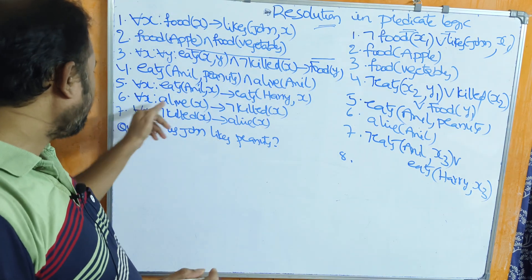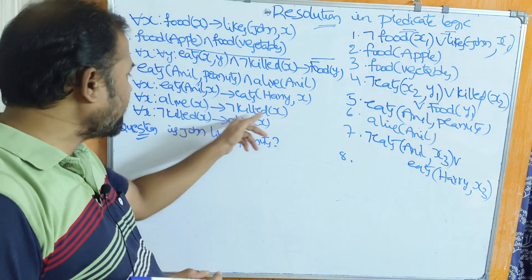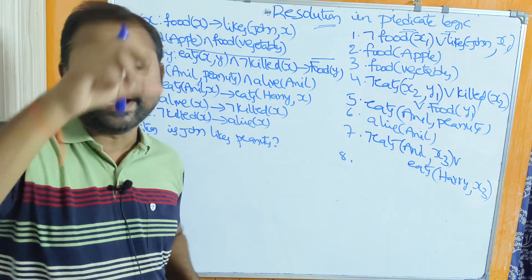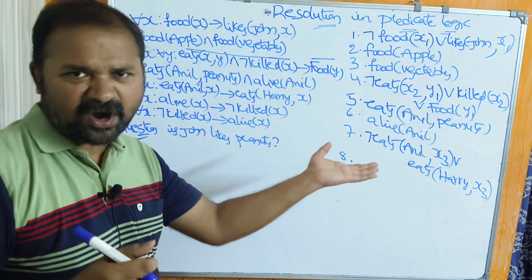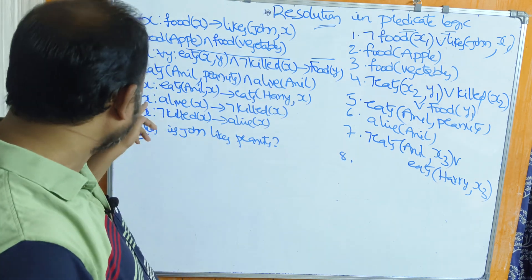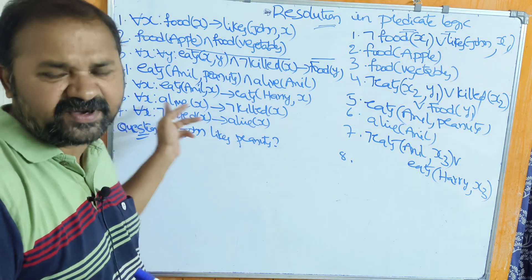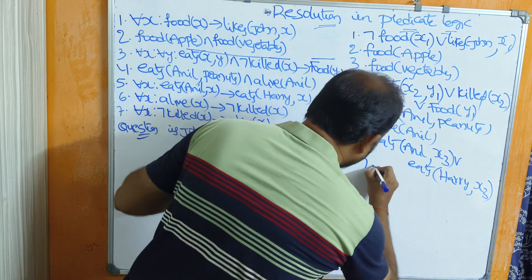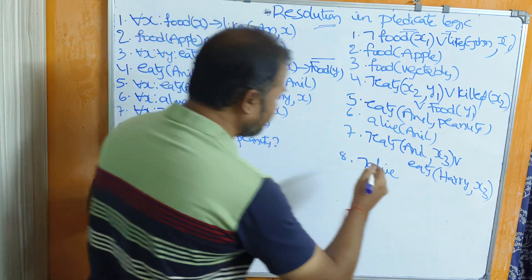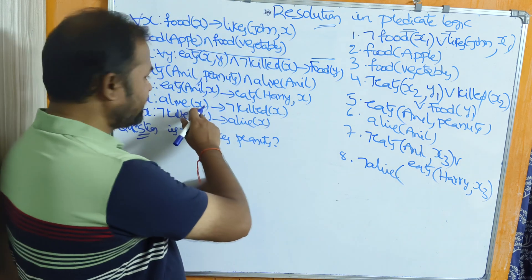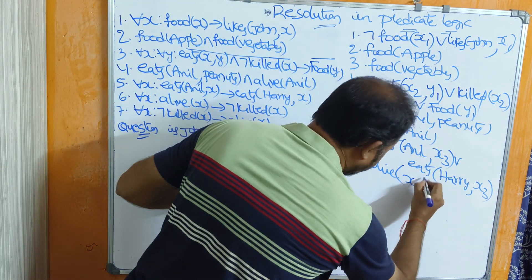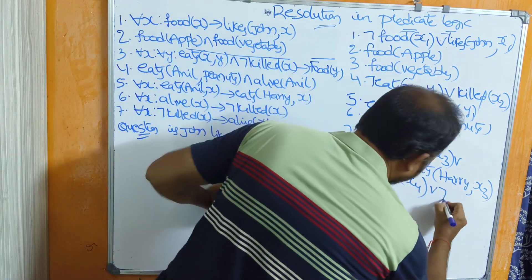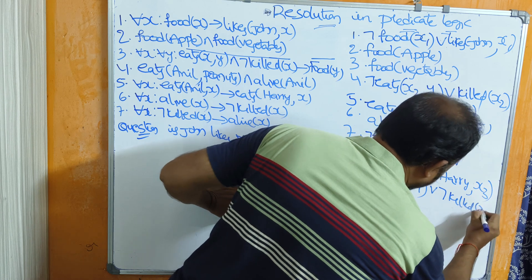Next: for all x, alive(x) implies negation killed(x). These two are additional statements included in the problem — alive means not killed, not killed means alive. Eliminating the universal quantifier and applying p implies q: negation alive(x4) or negation killed(x4).